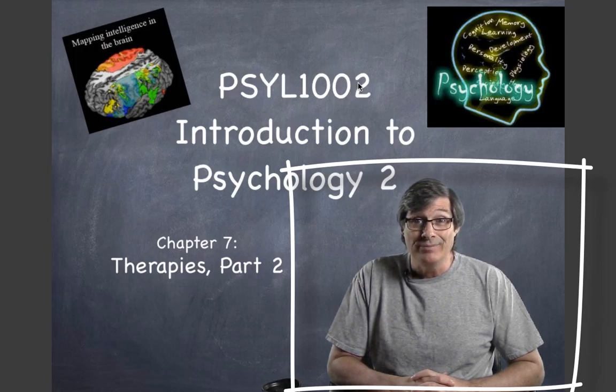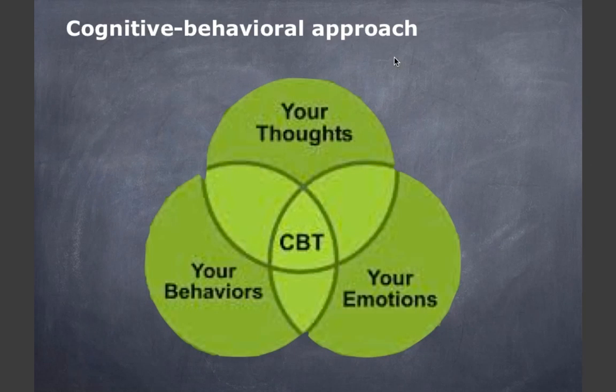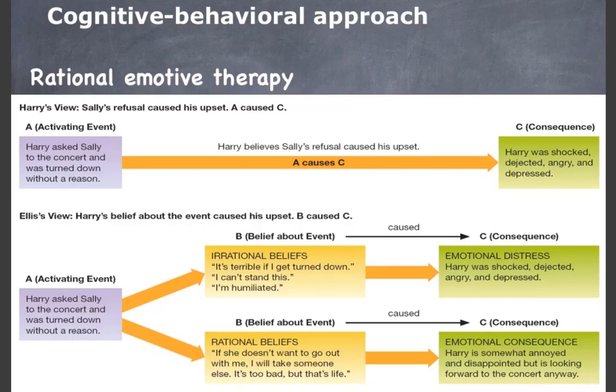The cognitive behavior approach assumes that maladaptive behavior can result from irrational thoughts, beliefs, and ideas. It combines cognitive insight with a methodical behavior approach. The therapist seeks to change the way the client thinks. Effectiveness is determined by assessing change in the client's behavior. It is effective for treatment of anxiety disorder, hypochondria, psychological drug dependence, and pathological gambling.